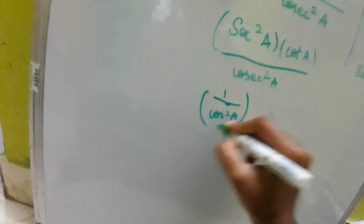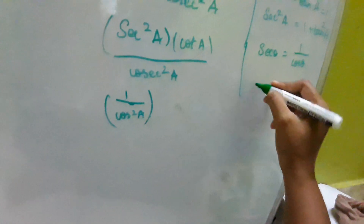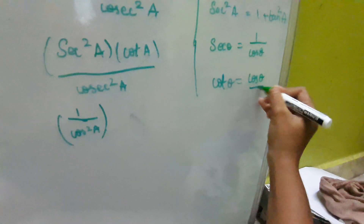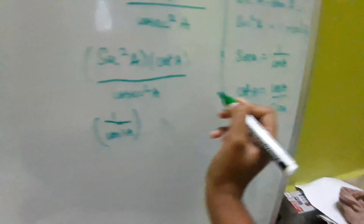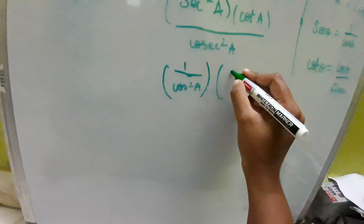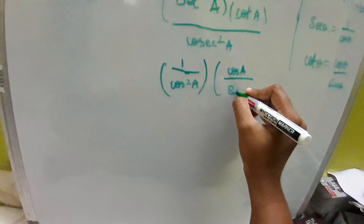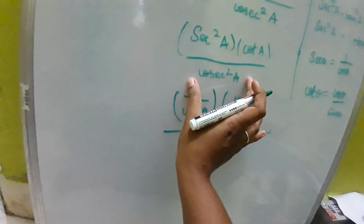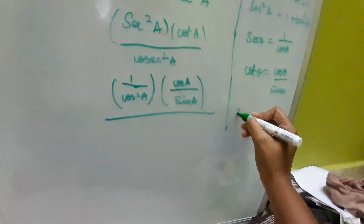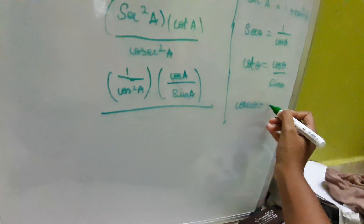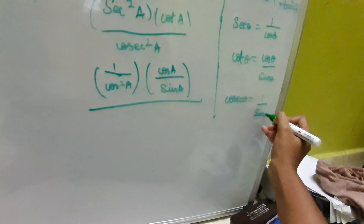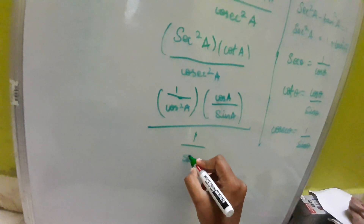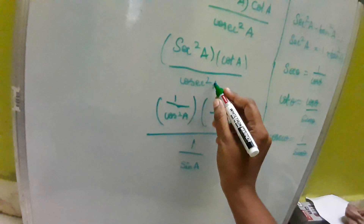Now instead of cot a, using the formula: cot theta equals cos theta divided by sin theta. So cot a becomes cos a divided by sin a. For the denominator, using cosecant theta equals 1 by sin theta, so cosecant squared a becomes 1 by sin squared a.